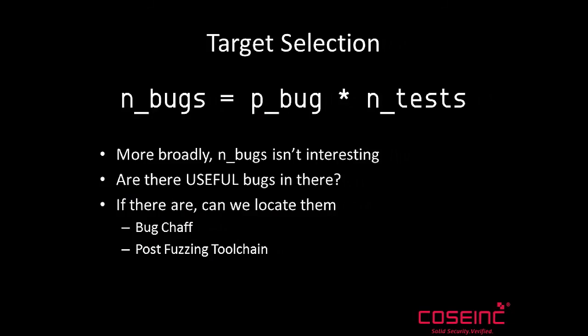The corpus distillation I talked about - minimizing code coverage. Let's go back to the equation and realize that the number of bugs is not an interesting number. I have a metric shit-ton of Microsoft Word bugs but that's not good for me. Having 200,000 or 500,000 doesn't make much difference. So are they useful bugs? And if they are, can we even find them? If we've got half a million bugs, how do I find which are the ones I care about? That turns out to be a deeply hard problem - the too many bugs problem. It's not the finding bugs that is difficult; the hard part is isolating the good ones.